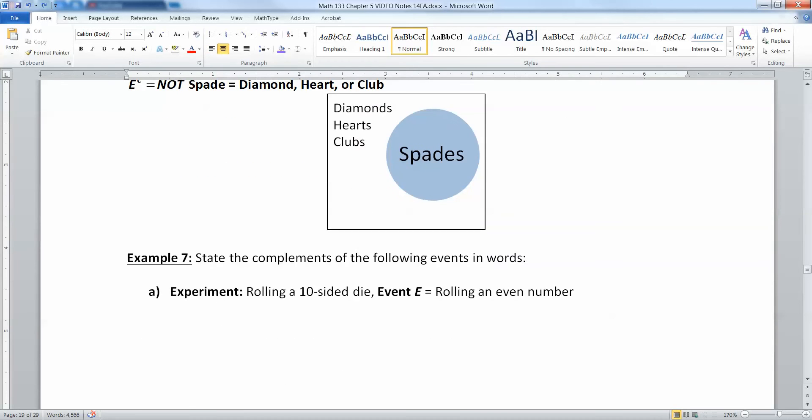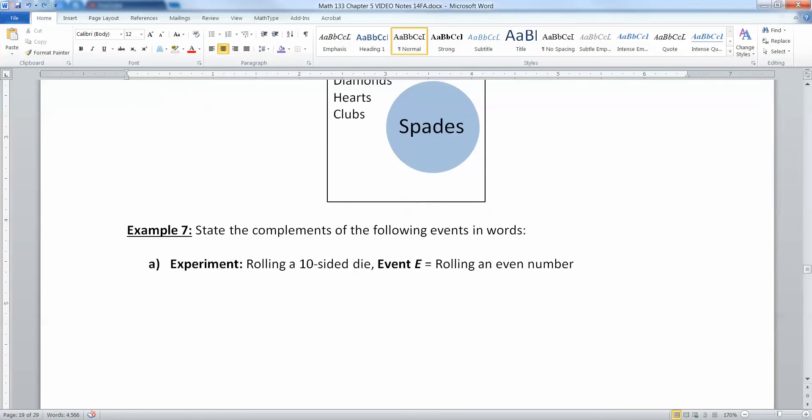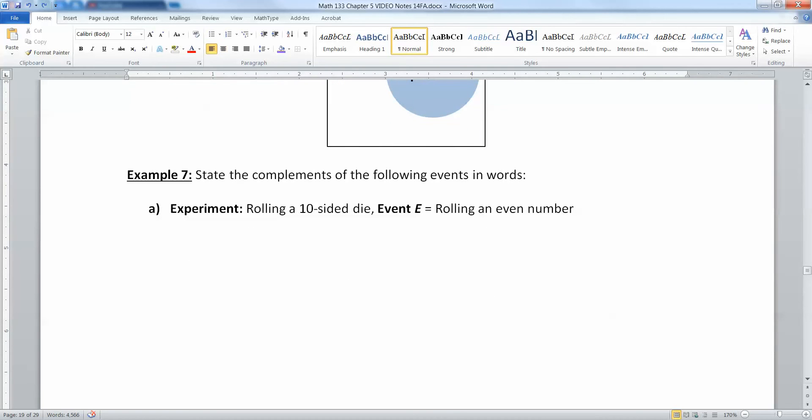So now how does that affect us for writing these up? Let's start with that. Suppose we have rolling a 10-sided die. And event E is rolling an even number. Then E complement would be not rolling an even number. That's rolling an odd number. If rolling an even number is your event, rolling an odd number is your complement.